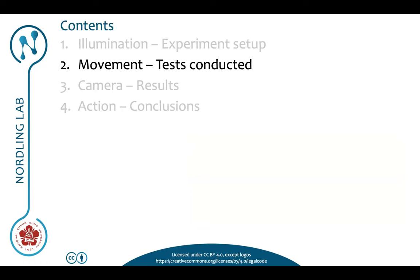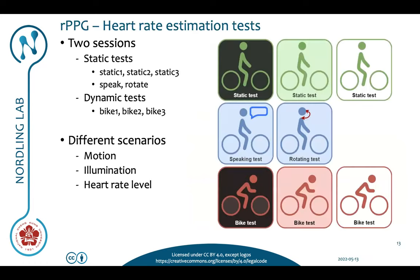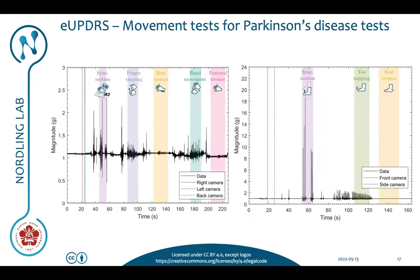Now let me move over to movement. For the heart rate estimation we performed a total of eight different tests: three static tests under different illumination conditions, three bike tests also under different illumination conditions, and then a speaking test. For our Parkinson disease project we currently record finger tapping movement, a rest tremor where you just rest your arm, hand movements, and a postural tremor where you keep your arm straight out.